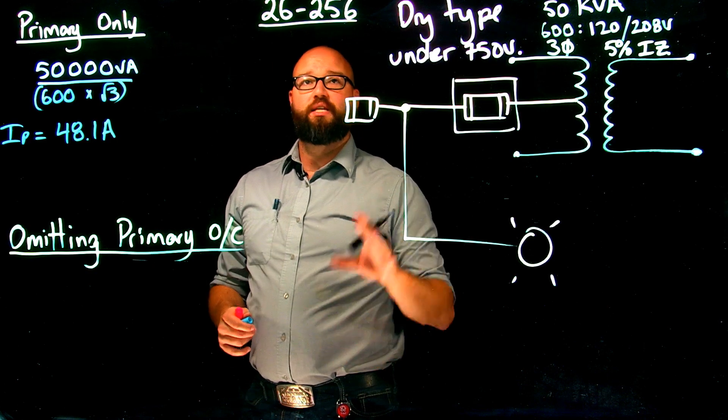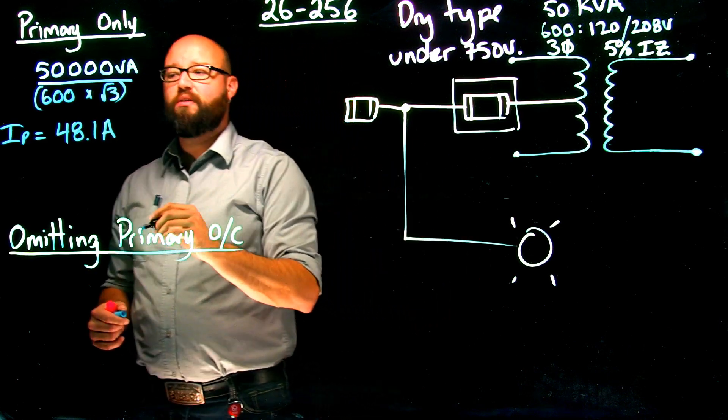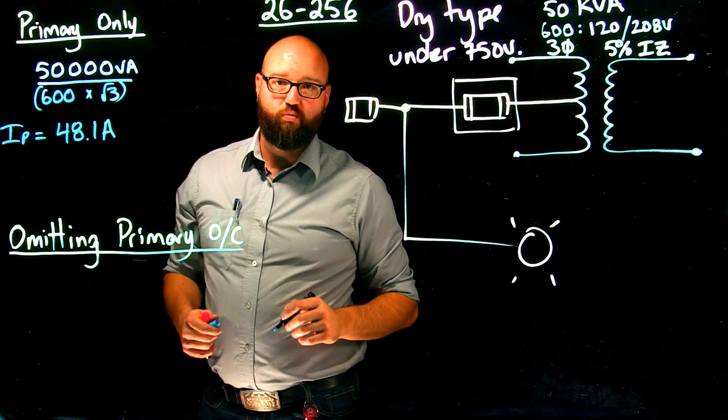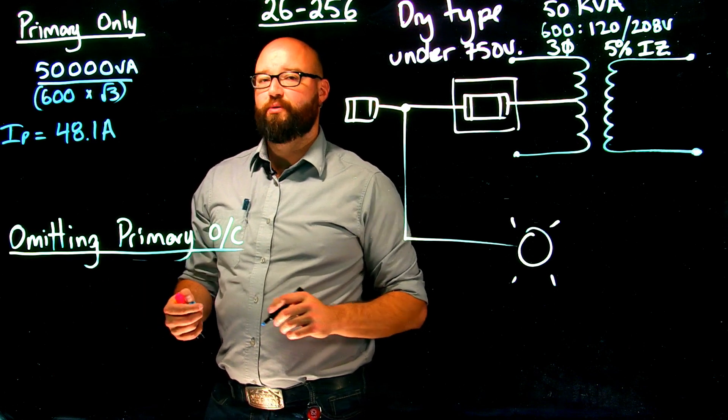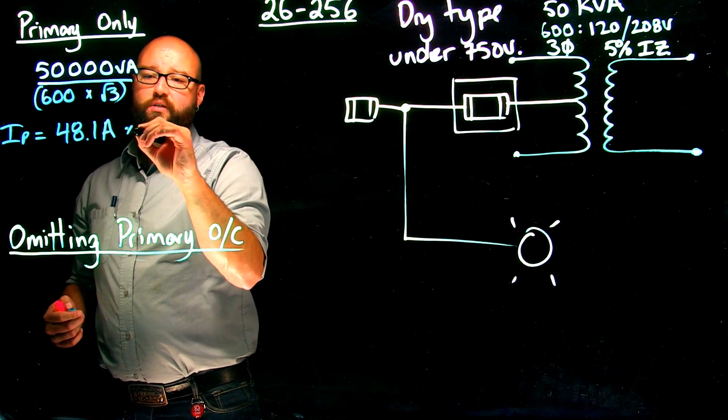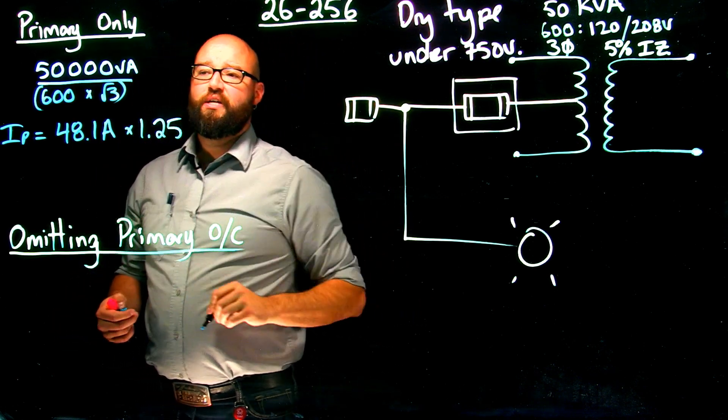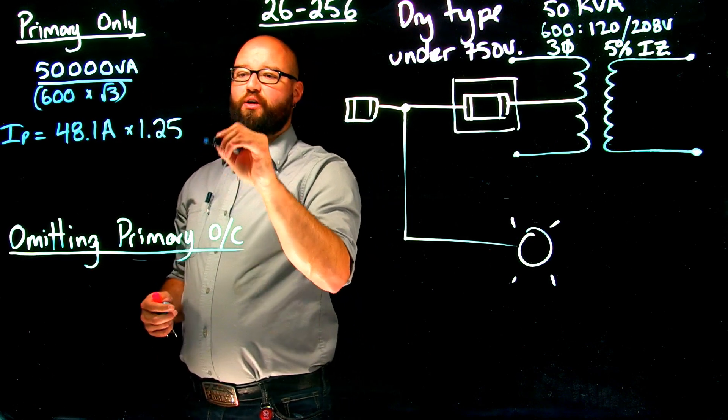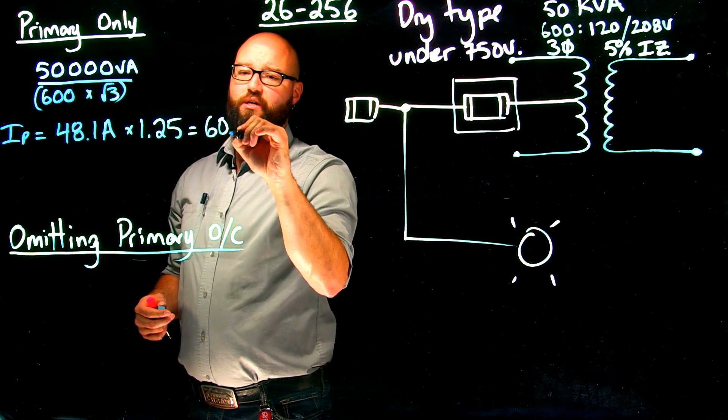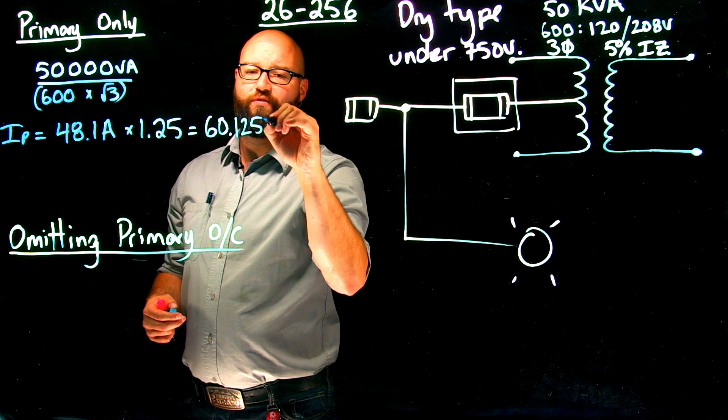And what it tells me, as I said, in 26-256 subrule one is we're going to use 1.25 or 125% as our multiplier. So times 1.25 gives me a max value of 60.125 amps.